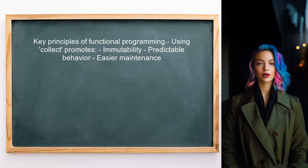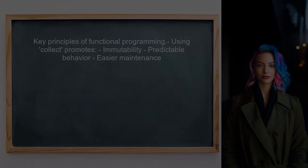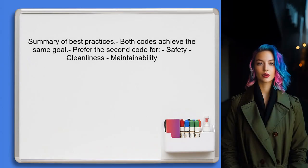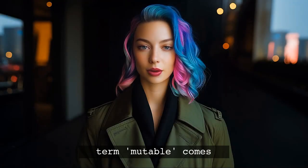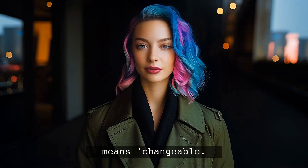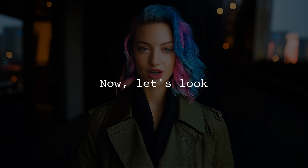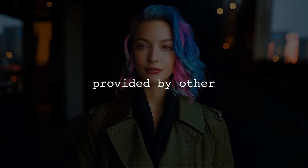By using the collect method, the user ensures that the original list remains unchanged, which is a key principle in functional programming. This leads to more predictable and maintainable code. While both pieces of code achieve the same goal, the second approach is preferred because it avoids the risks associated with shared mutability, leading to cleaner and safer code. Fun fact: the term 'mutable' comes from the Latin word mutabilis, which means changeable. In programming, we want to be careful about what we allow to change.